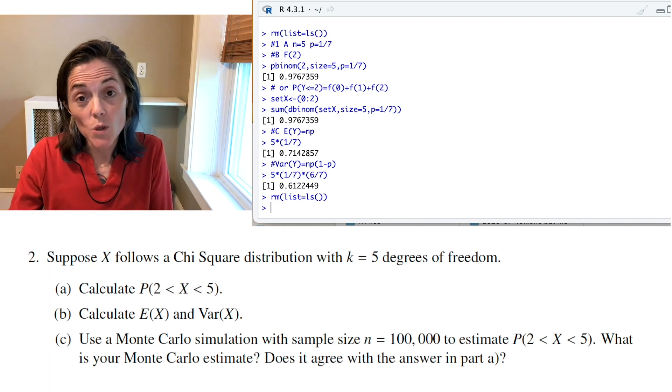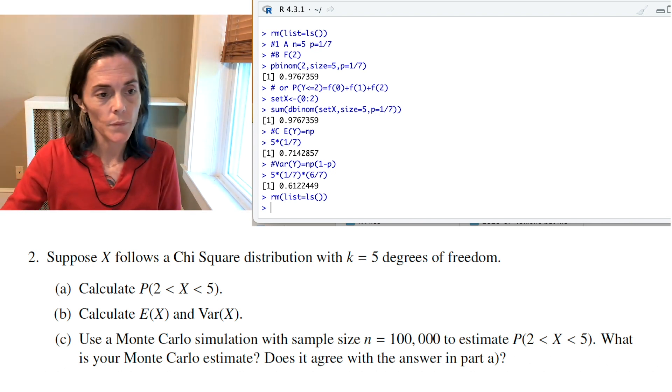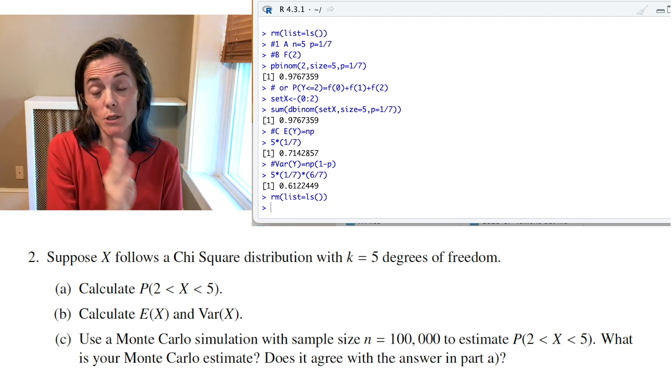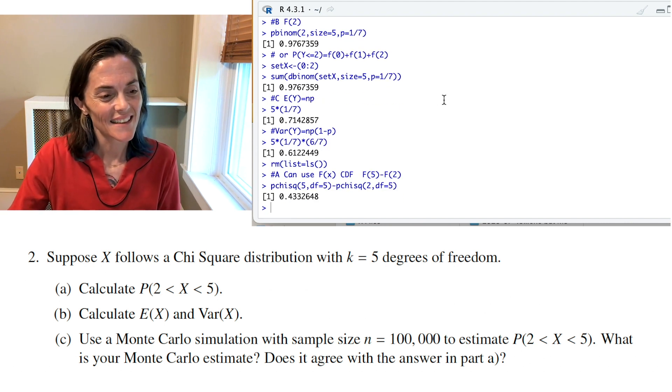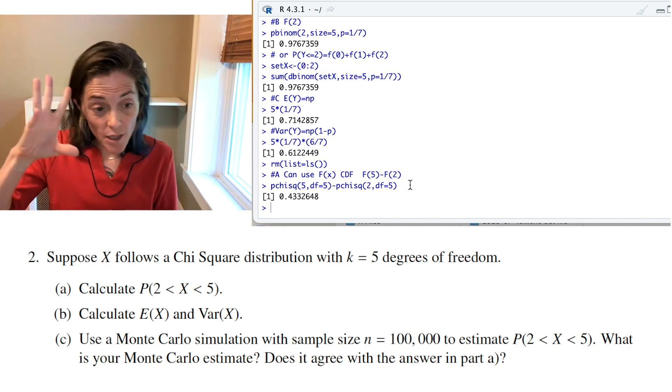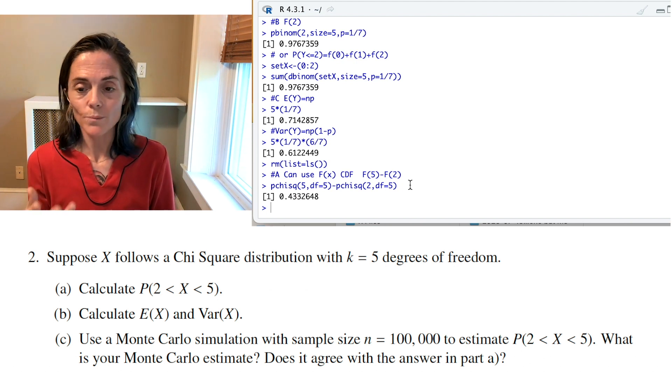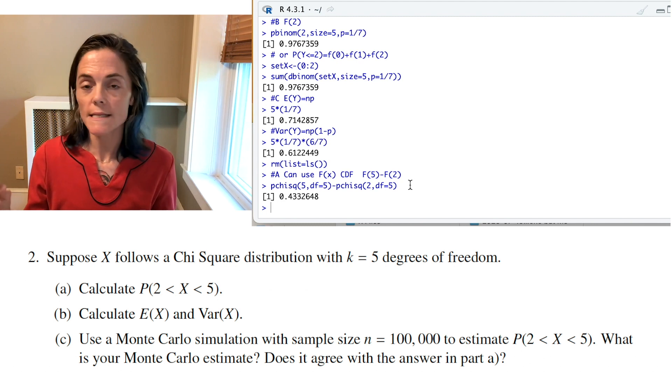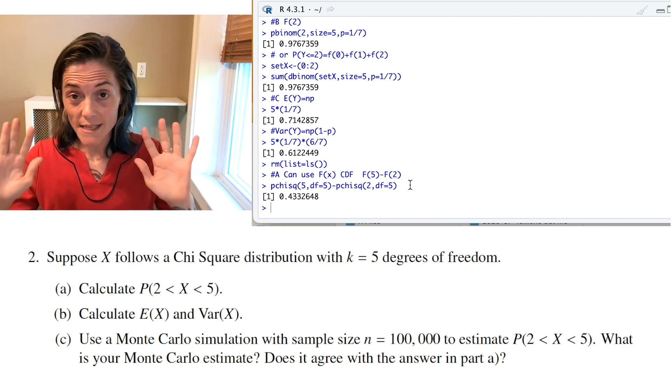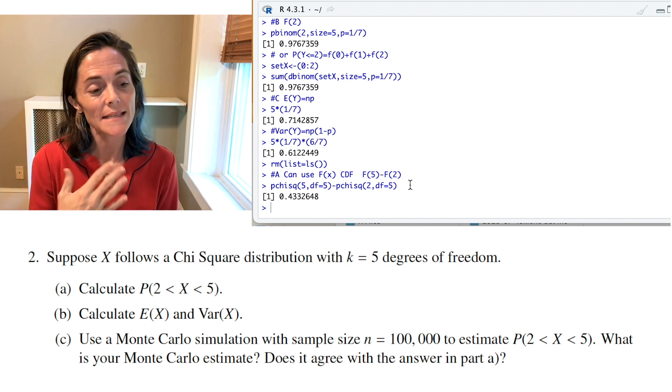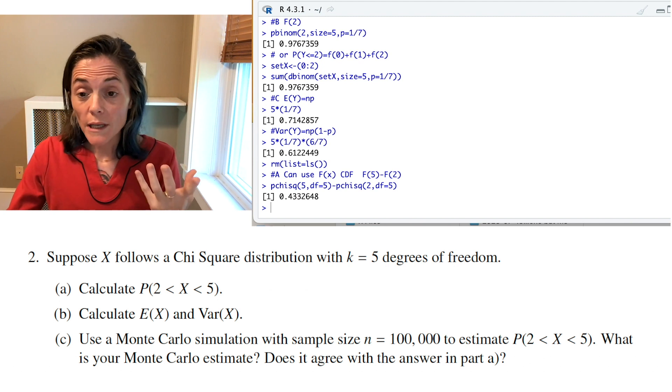What's the next one? X follows a chi-square distribution. X is a continuous random variable, and we're given k equals 5 degrees of freedom. Now, we want the probability that X lies between 2 and 5. We have two possibilities here. We can start by using the cumulative distribution function. We take capital F of 5 minus capital F of 2. The reason we can do this is we are continuous. And so, it doesn't really matter if we use less than or equal to or just less than.